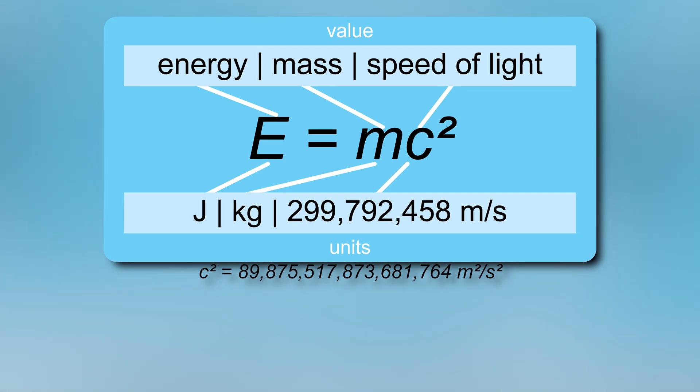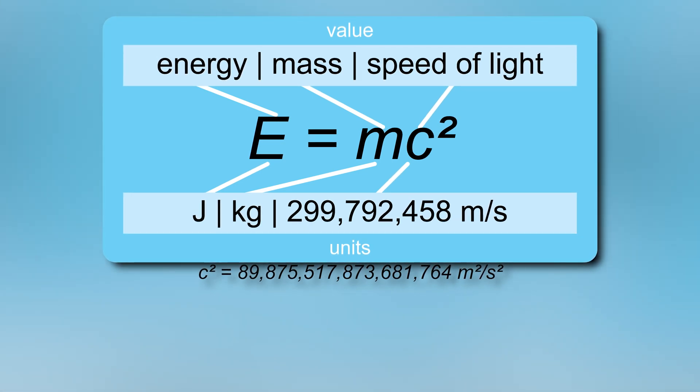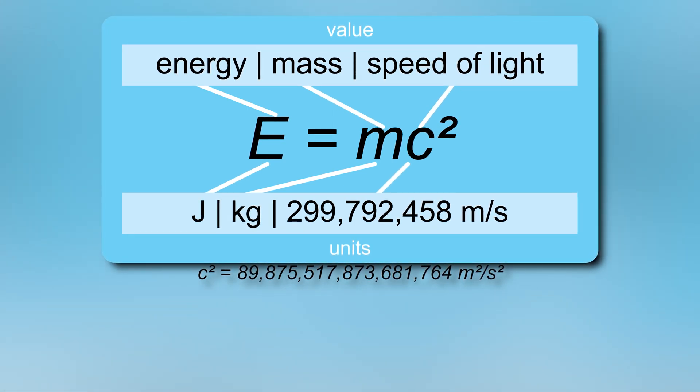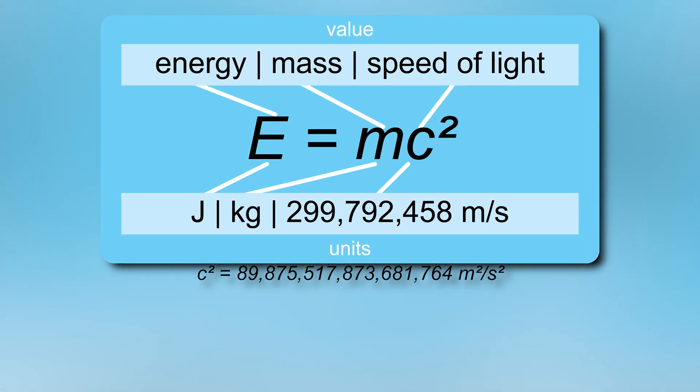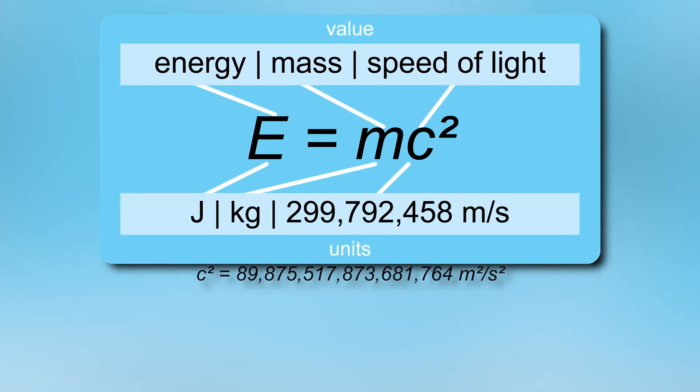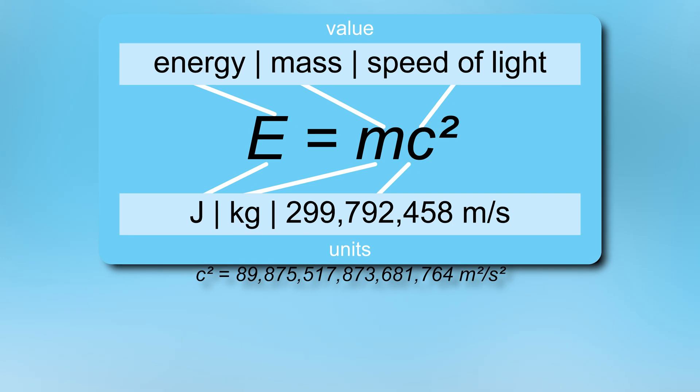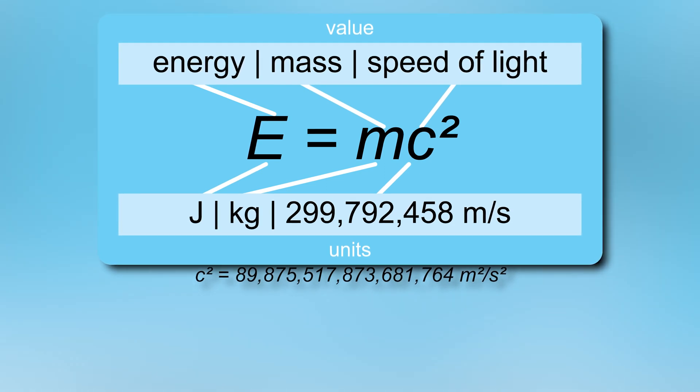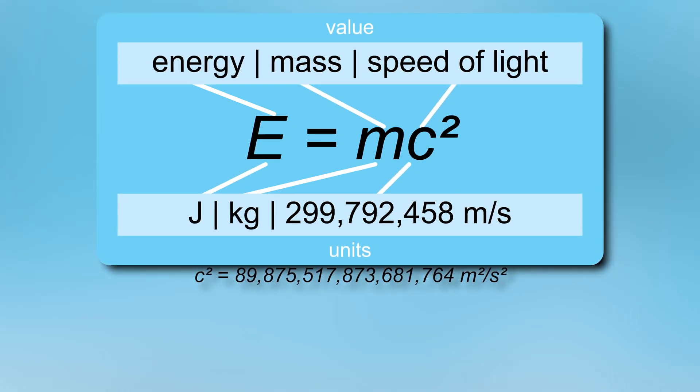The formula states that the energy E of a particle in its rest frame is equal to the product of its mass m and the speed of light squared, c squared.